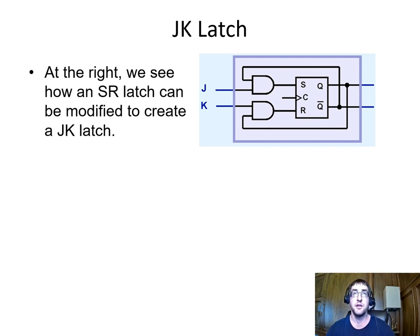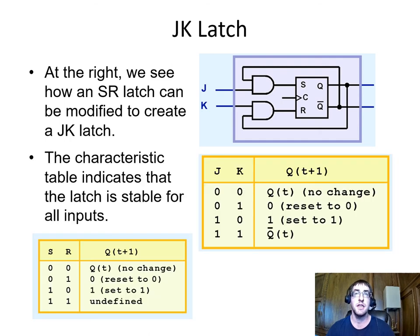Another simpler way to fix the SR latch is to further gate the circuit inputs by the circuit outputs. This circuit uses an SR latch as the building block, but it feeds Q-tick back into an AND gate on the S input, now called J, and the Q state output back into the R input, now called K. The addition of these two gates fixes the problem. Now when J and K are both 1s, the input to S is Q-tick and the input to R is Q. So if Q-tick is 1, then Q will be set to 1. If Q-tick is 0 and Q is 1, then Q will be reset to 0. So the next state Q of T plus 1 will be Q-tick.